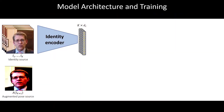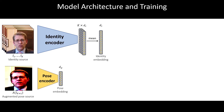Our architecture is trained on a dataset of videos. In each training episode, we sample k plus 1 frames of a video. We use k frames to estimate a vectorial identity embedding by extracting vectors from each frame and then averaging them. We use the last frame to estimate the pose embedding.